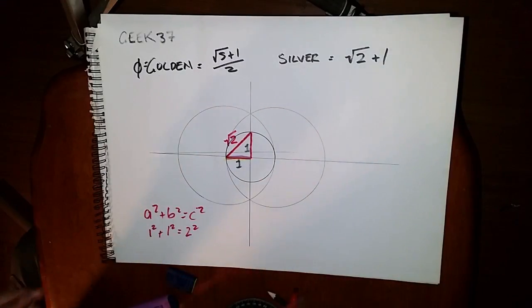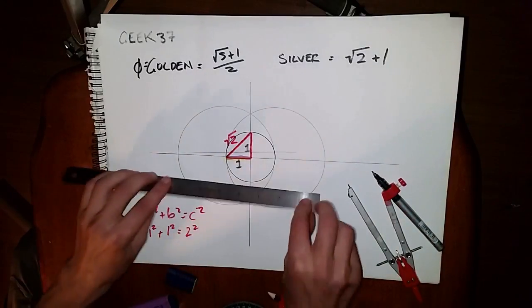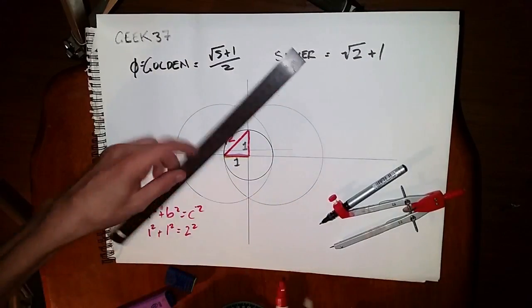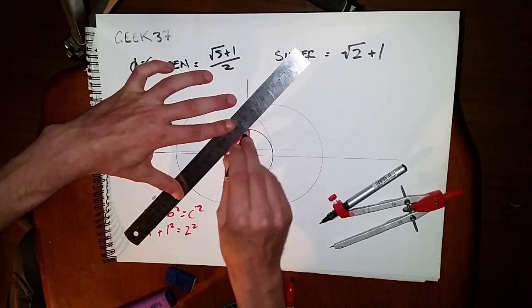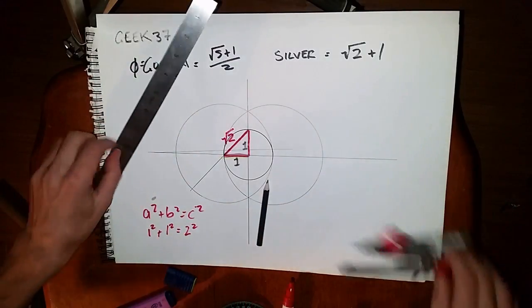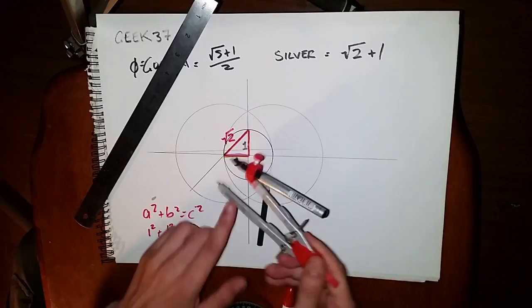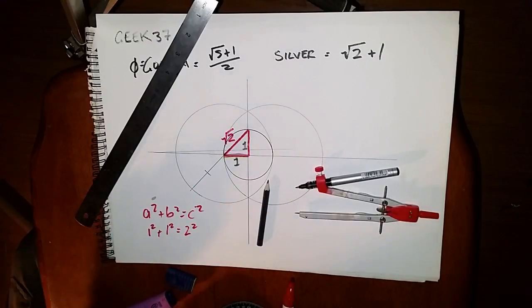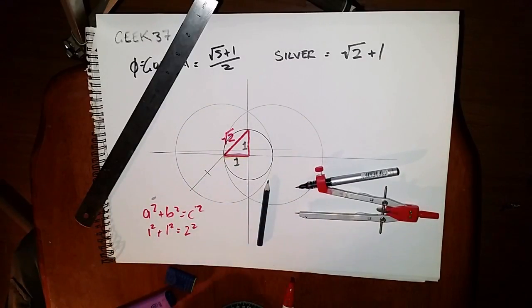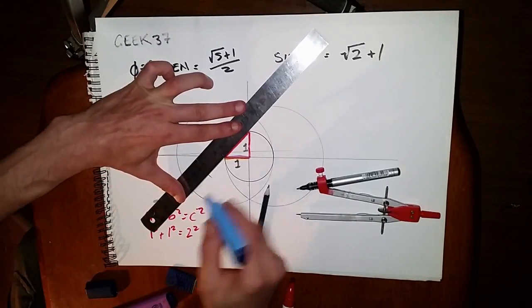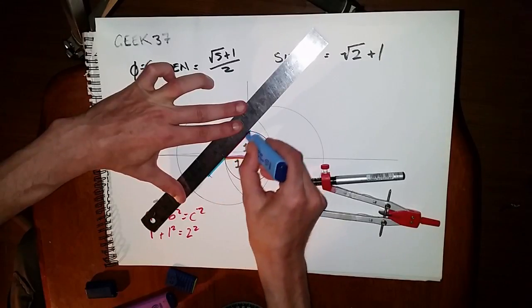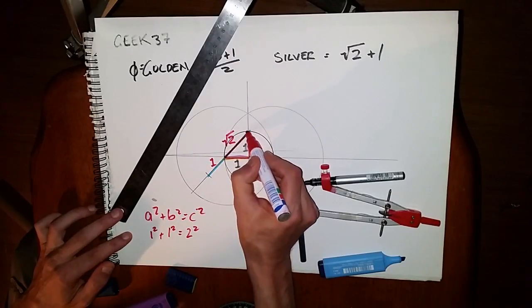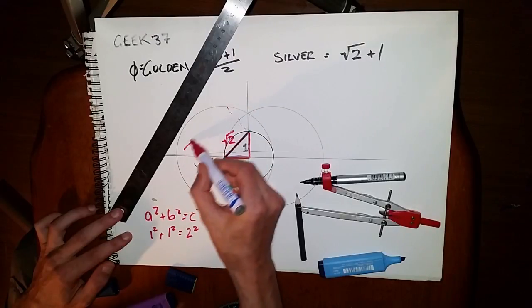And my compass is still set on one, so one way to do this would be to extend the line. We already have our compass set at one, and so we already have square root of two, therefore this section is the square root of two plus one. Therefore this is the silver ratio.